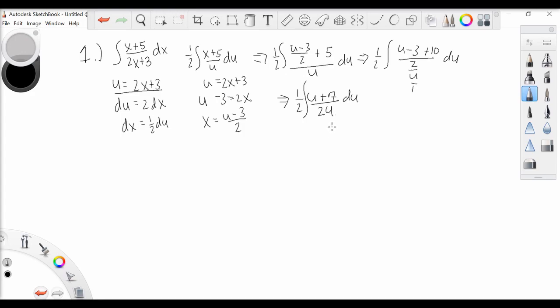So this looks like a much more friendly integral, but we can still simplify it further by pulling out that one-half. So really we have one-fourth the integral of u plus 7 over u du.